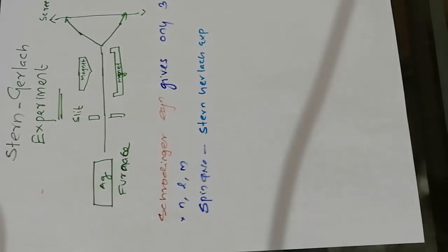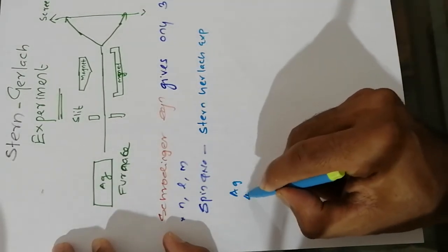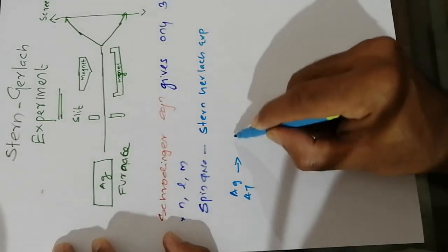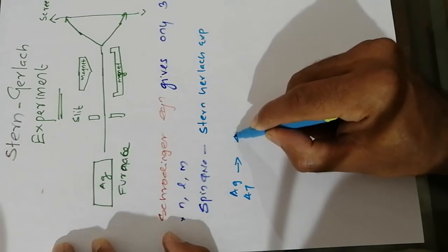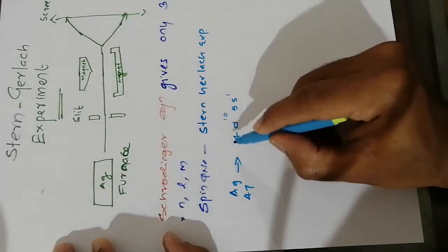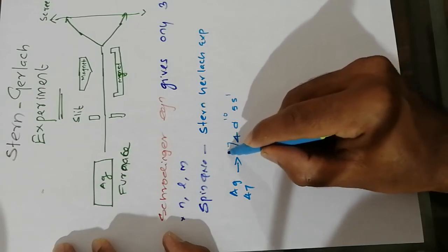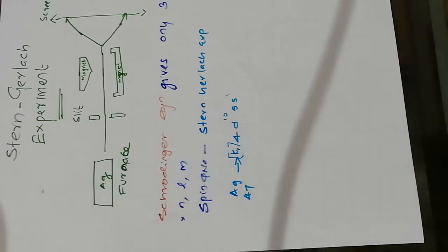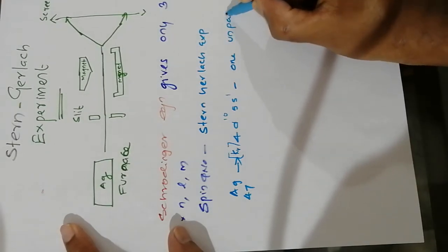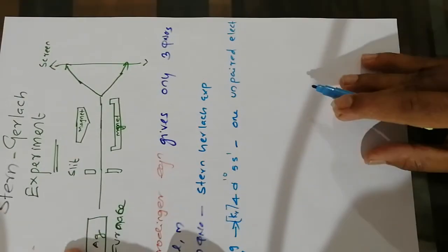I will explain what the experiment is. This experiment uses a furnace containing silver metal, that is element 47. Silver has the configuration 4D10-5S1, meaning it has only one unpaired electron.